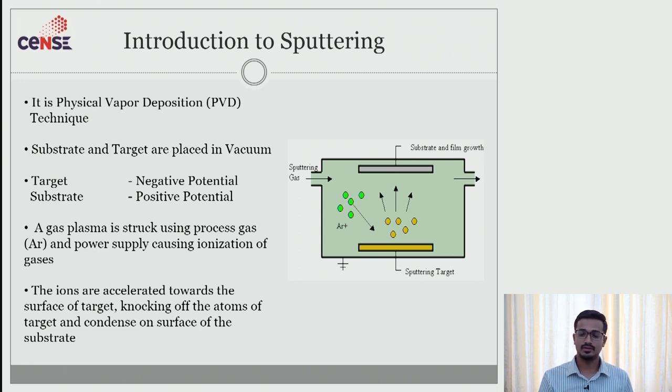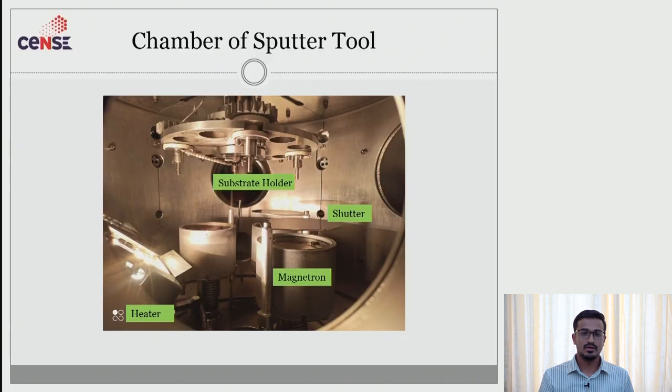We will now look into one of our tools in NNFC. We have a chamber which can deposit a thin film. We have dedicated these chambers for metal deposition and dielectric deposition. Here is an overview or a chamber view of a sputtered tool. Here we can see three different magnetrons and shutters on top of it and these are all the holders where we can mount our samples onto it and then there is a heater facility which can go up to 100 degree Celsius.